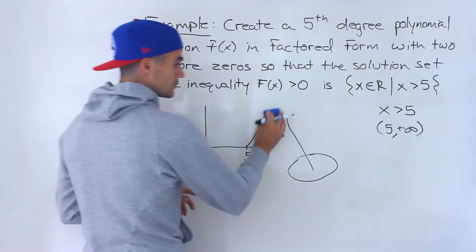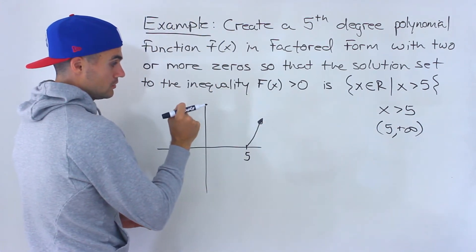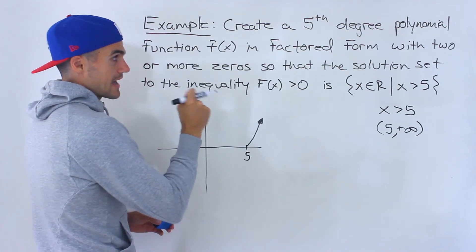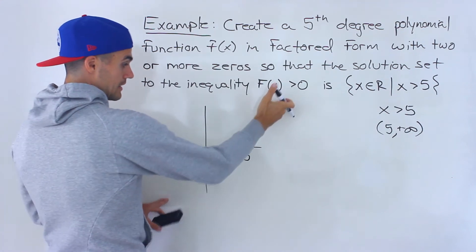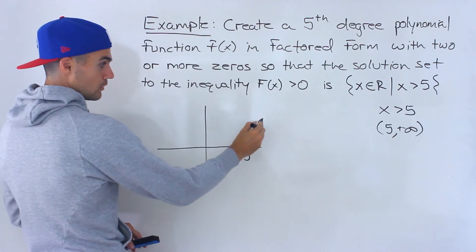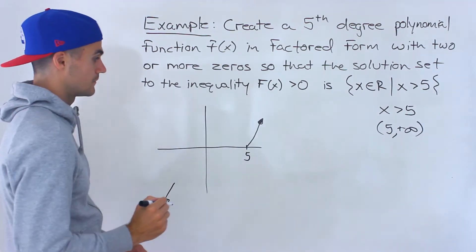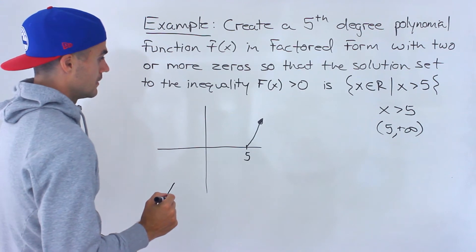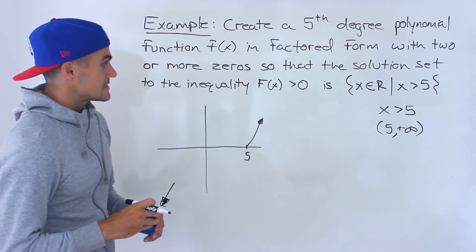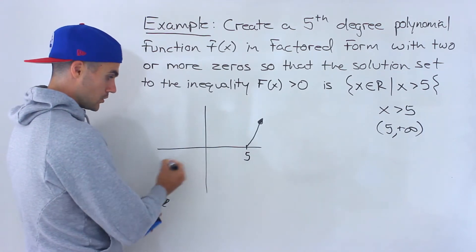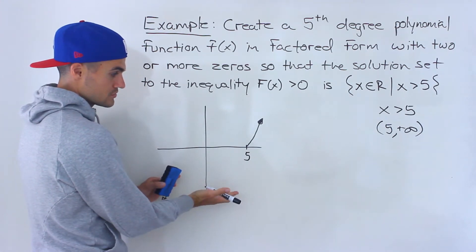Because it's a fifth degree polynomial, it's an odd degree polynomial, and we know the end behaviors are opposite — either up-left/down-right or down-left/up-right. If we know this right-hand portion has to be going up, then we know the left side of the polynomial has to go down. So everything to the left of five has to be less than or equal to zero.